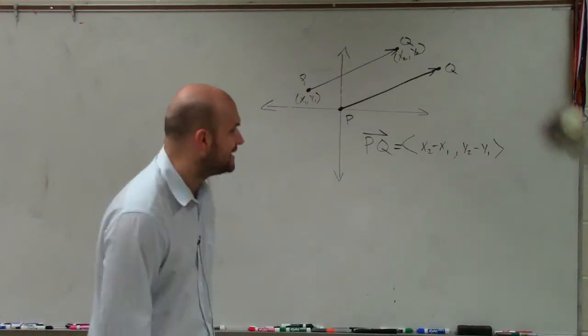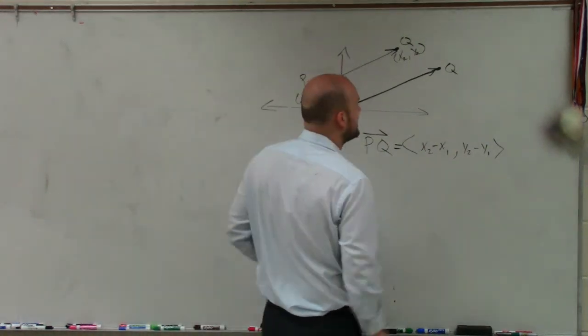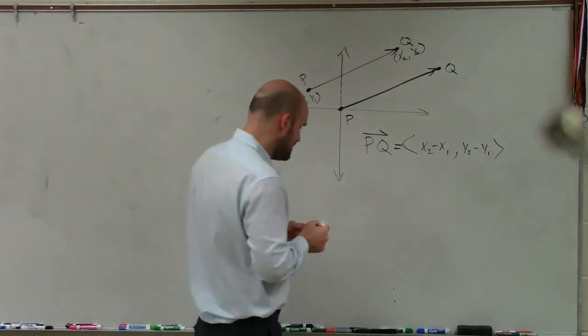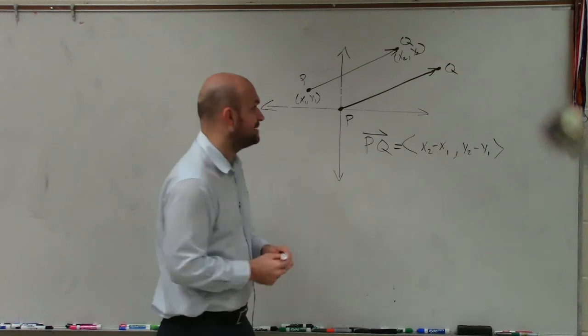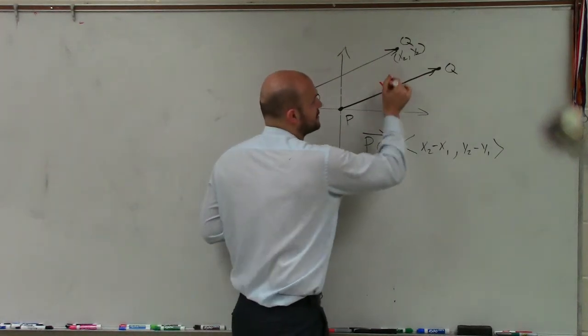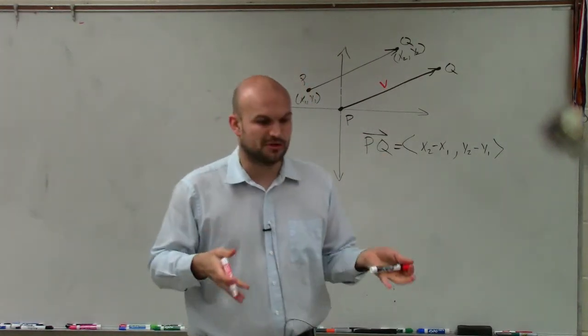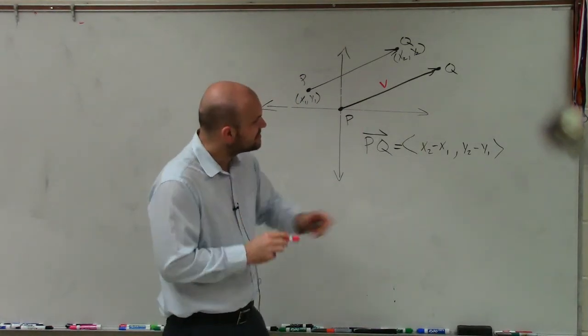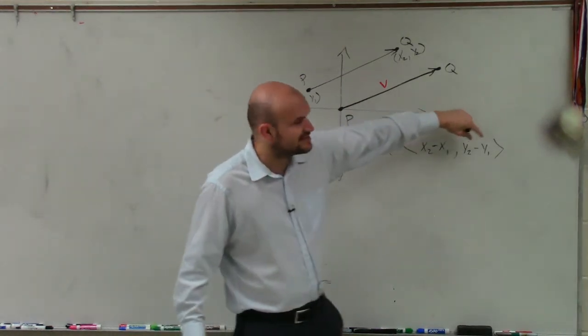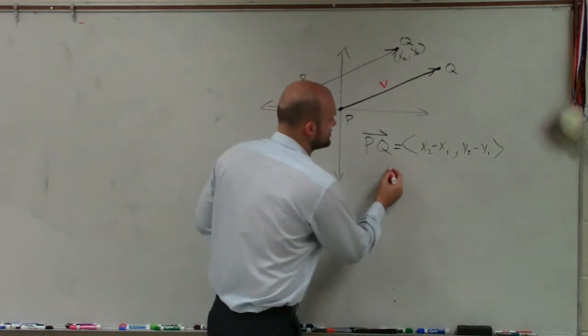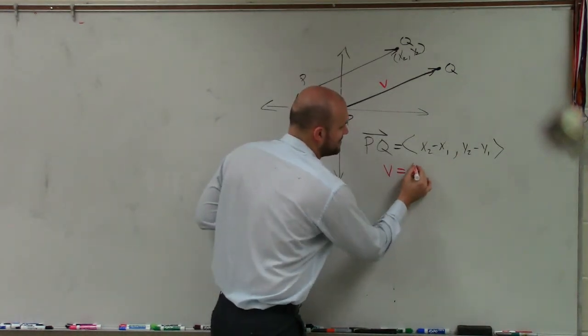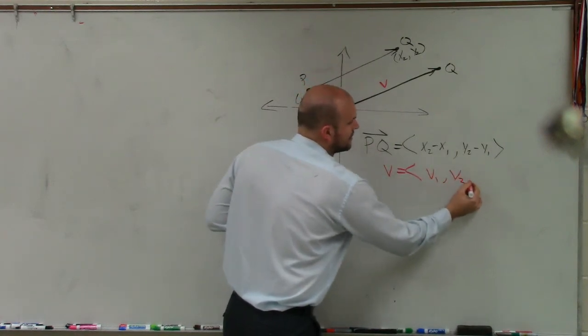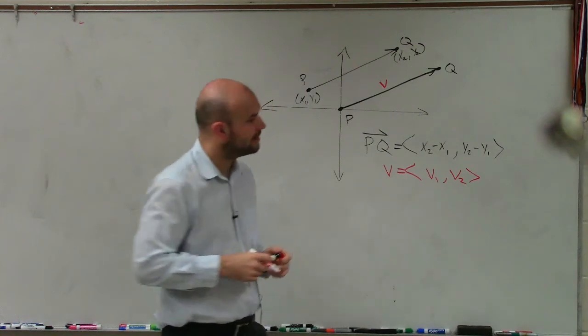And when we go ahead and determine what these values are, a lot of times we like to write vectors not only by just what the initial and the terminal points are, but a lot of times we like to give them names. And the names we like to be very creative with: v, w, u. In this case, I'll call this vector v. And when we subtract our x-coordinates and our y-coordinates, what we like to do is kind of give them the same name as our coordinate vector. But now we'll call this v1 and v2, all right?